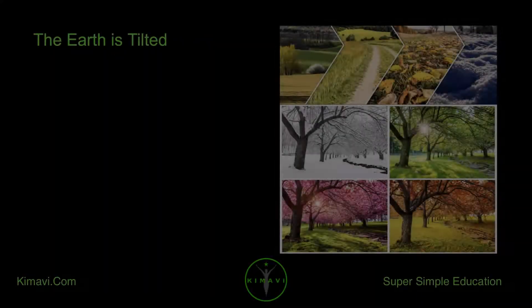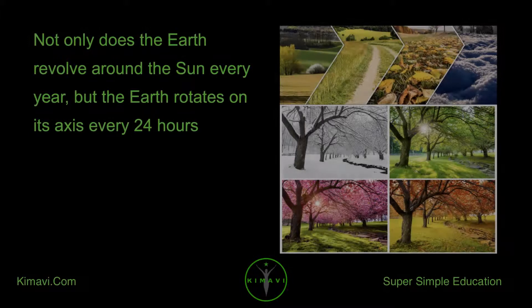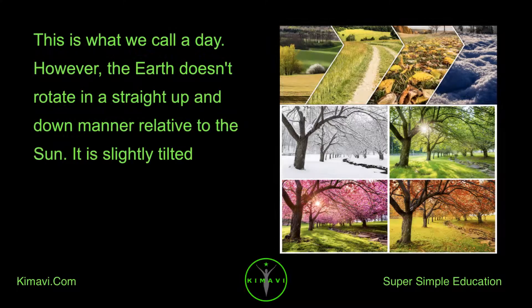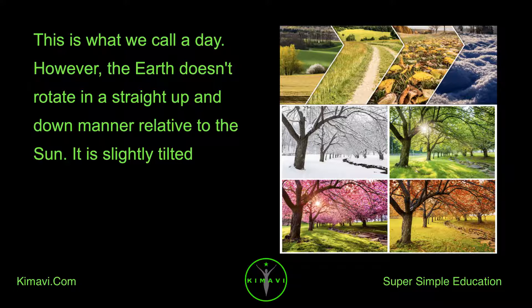The Earth is tilted. Not only does the Earth revolve around the Sun every year, but the Earth rotates on its axis every 24 hours. This is what we call a day. However, the Earth doesn't rotate in a straight up and down manner relative to the Sun. It is slightly tilted.